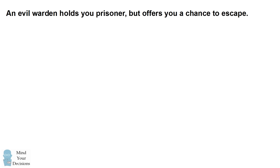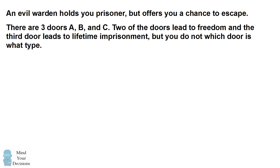Hey, this is Presh Talker. An evil warden holds you prisoner but offers you a chance to escape. There are three doors A, B, and C. Two of the doors lead to freedom and the third door leads to lifetime imprisonment. But you do not know which door is what type.